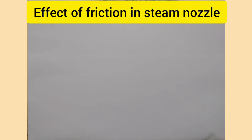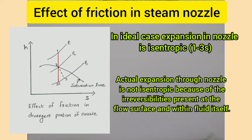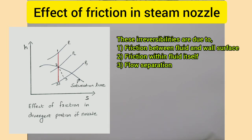Let us start with the effect of friction in nozzles. In the ideal case, the expansion in a nozzle is isentropic, i.e., process 1-2-3s as shown in the figure. But actual expansion through nozzles is not isentropic because of irreversibilities at the surface of flow and within the fluid itself. These irreversibilities are due to friction between the fluid and the wall surface of the nozzle, friction within the fluid itself, and also due to flow suppression in the nozzle.